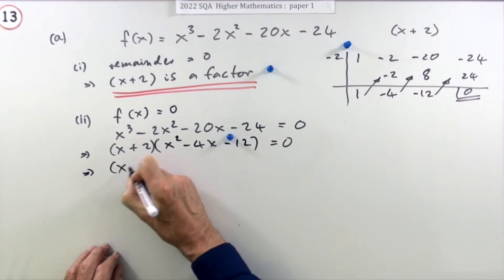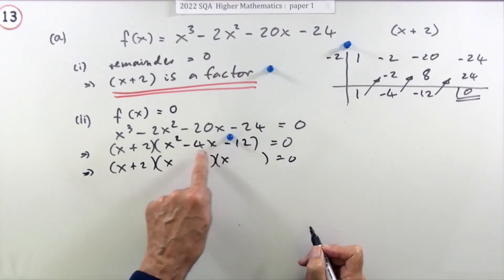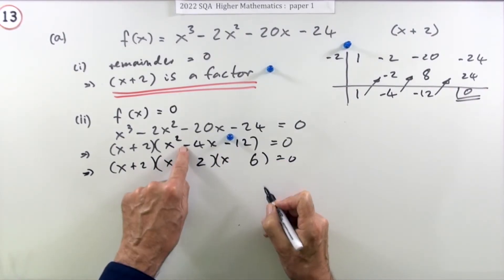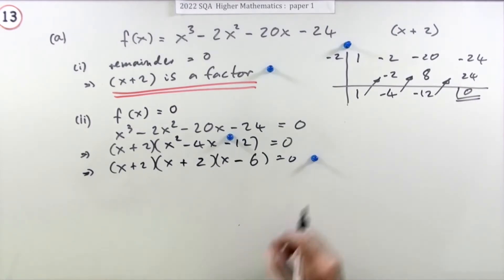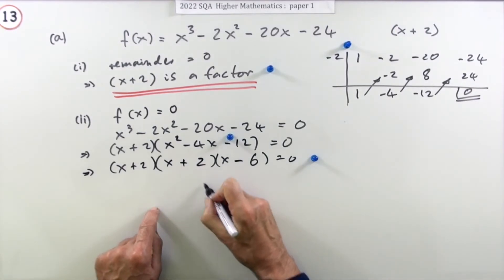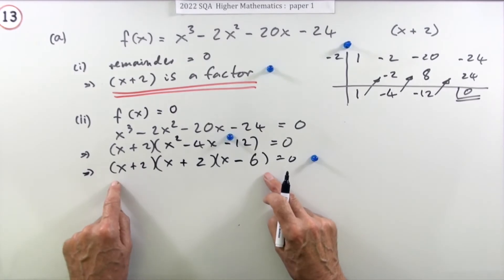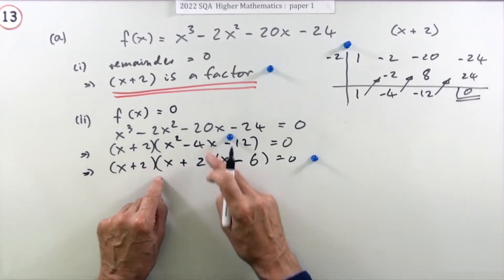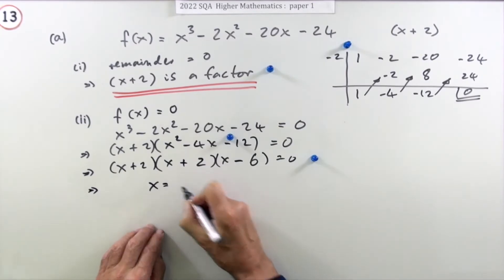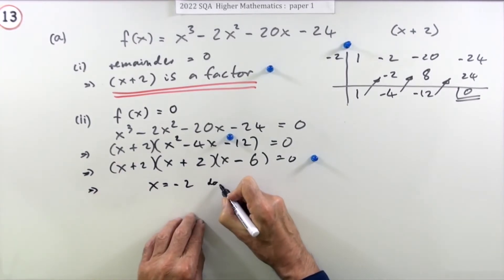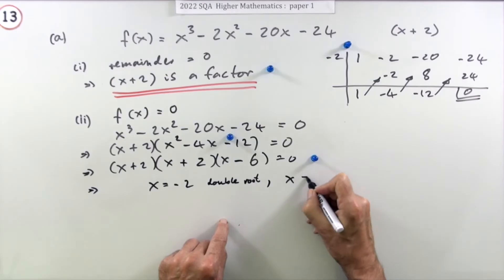Now factorize the quadratic x² − 4x − 12. We need two numbers that multiply to give 12 with a difference of 4: that's 2 and 6. The negative goes with the 6, so we get (x + 2)(x − 6). This gives the full factorization (x + 2)² (x − 6) = 0. The solutions are x = negative 2 — a double root, significant for the graph — and x = 6.